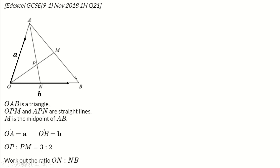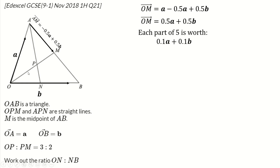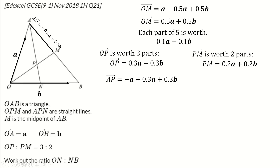M is the midpoint, so A to B is minus A plus B, and O to M is A plus half(minus A plus B), which equals half A plus half B. The ratio O to P : P to M is three to two, so O to P is three-fifths of O to M, giving O to P equals 0.3A plus 0.3B. From that I can find A to P, which is minus A plus 0.3A plus 0.3B, giving minus 0.7A plus 0.3B.